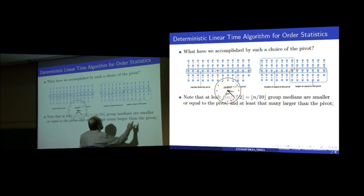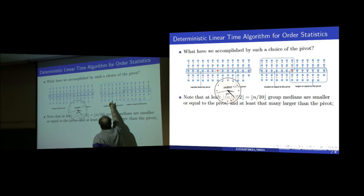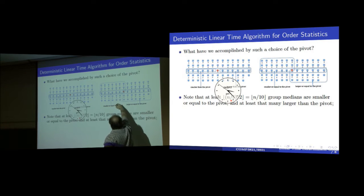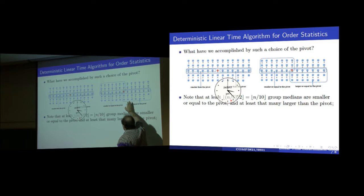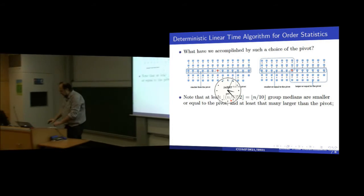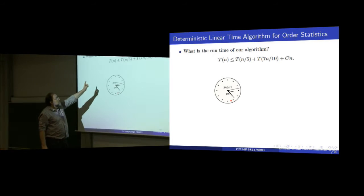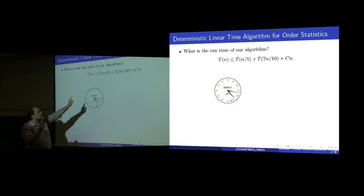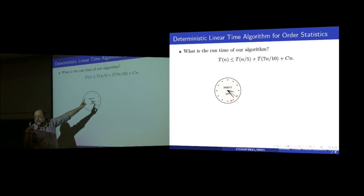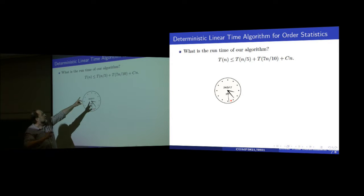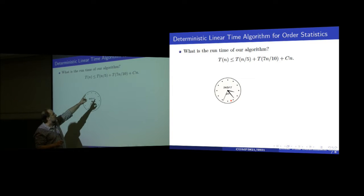So all together, this is n over 5 divided by 2, which is n over 10, times 3 — 3 tens. So if you now split all the elements along the pivot, relative to the pivot, both sides will have at least 3 tens of the elements, which means that the other side cannot be larger than 7 over 10. So how fast is this algorithm? Well, the runtime — when you have a problem of size n, you reduce it to a problem of size n over 5, which is finding the pivot, because we apply the algorithm recursively to the middle strip. So to find the pivot is T of n over 5.